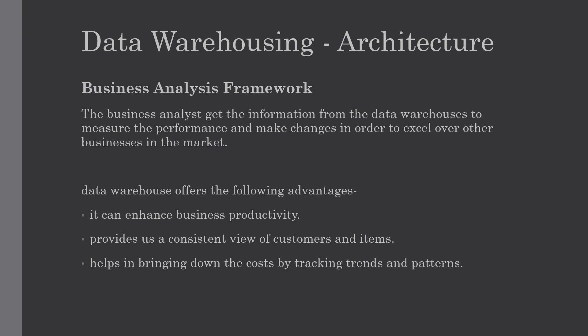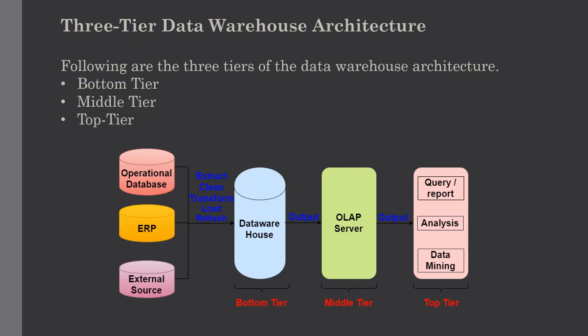The data warehouse view includes the fact tables and the dimension tables — it represents information stored inside the data warehouse, such as metadata. The last one is the business query view, which is the view of data from the viewpoint of the end user. Our next topic is the three-tier data warehouse architecture.